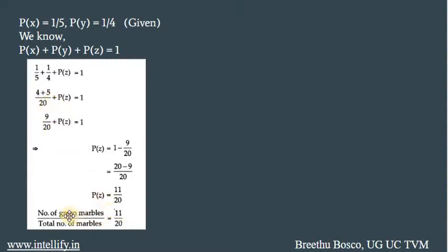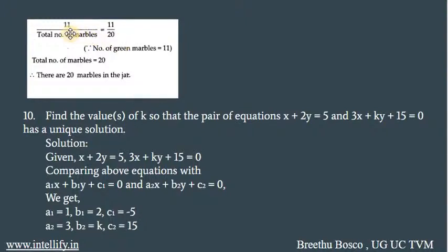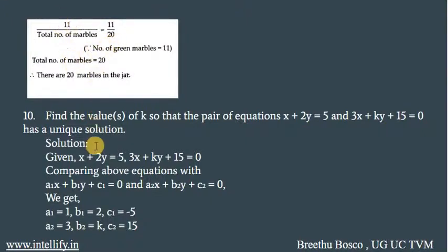P(Z) is the probability of selecting green marbles, which equals number of green marbles divided by total number of marbles. Since P(Z) = 11/20 and there are 11 green marbles, the total number of marbles is equal to 20. So there are 20 marbles in the jar.